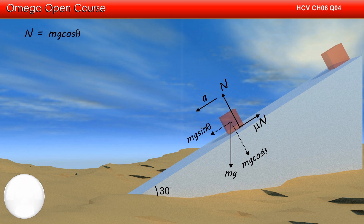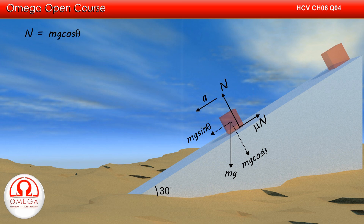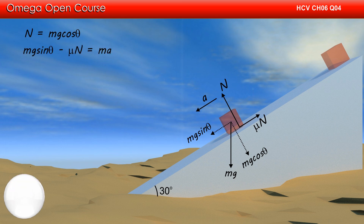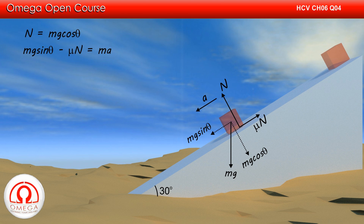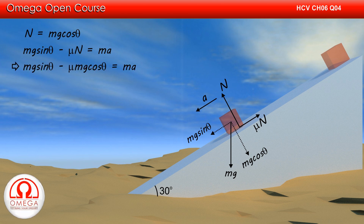Balancing the forces in the direction perpendicular to the incline, we get N is equal to mg cos theta. Writing the equation of motion along the incline, we get mg sin theta minus mu N is equal to ma. Putting the value of normal force, we get mg sin theta minus mu mg cos theta is equal to ma.